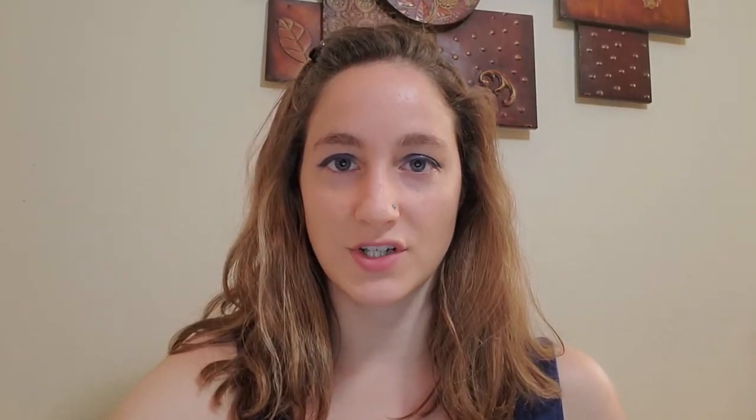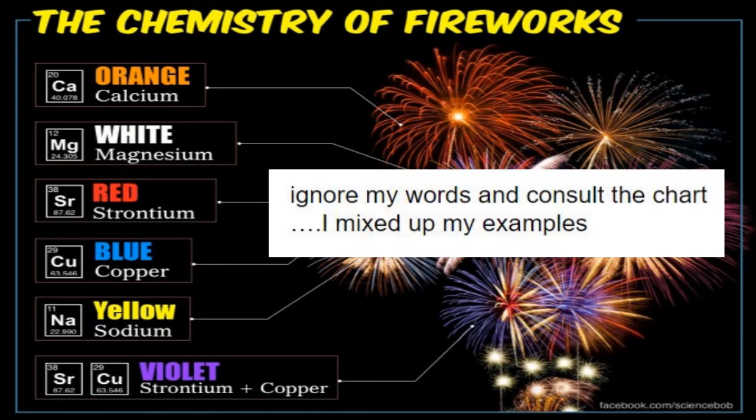Different metal compounds emit characteristic colors when heated to these high temperatures. Thus by noting the color of your fireworks you can determine what metals are present. For example, strontium glows red, sodium burns orange, and copper burns green.